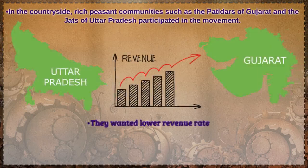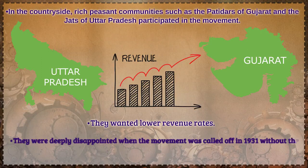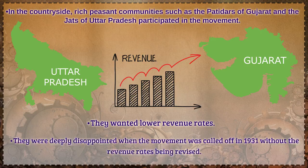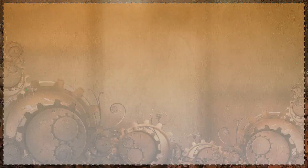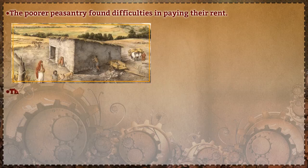In the countryside, rich peasant communities such as the Patidars of Gujarat and the Jats of Uttar Pradesh participated in the movement because they were producers of commercial crops and were hard hit by the trade depression and falling prices. For them, the fight for Swaraj was a struggle against high revenues. They were deeply disappointed when the movement was called off in 1931 without the revenue rates being revised, and when the movement was restarted in 1932, many of them refused to participate.